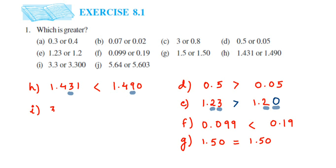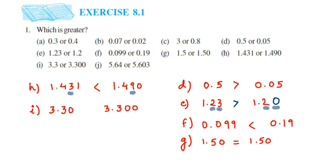The next question: 3.3 and 3.300. The whole part is 3 in both. The tenth place is also 3 in both. The next digits are zero and there is no number, which we take as zero. Putting zeros after the decimal point doesn't change the value of the number, so both numbers are equal.